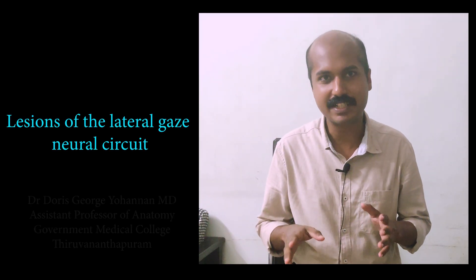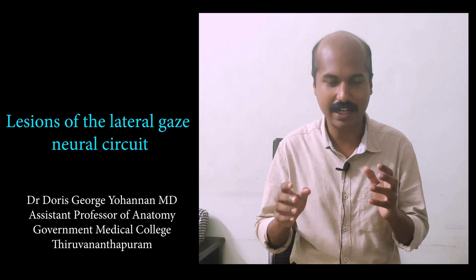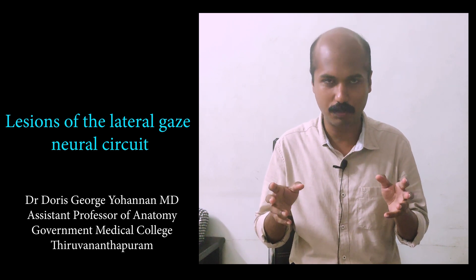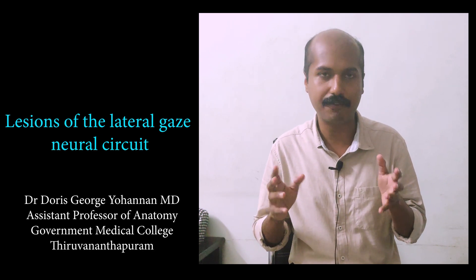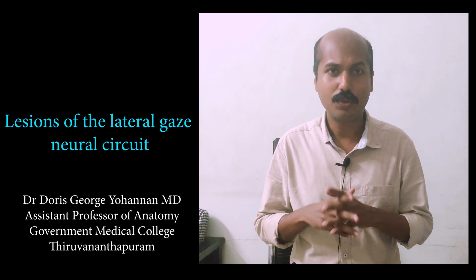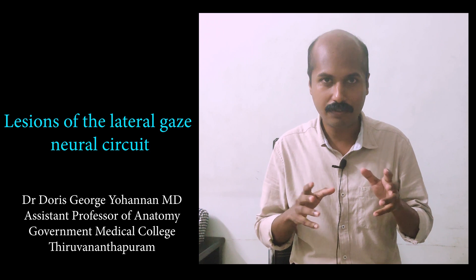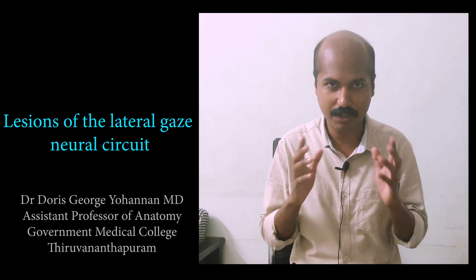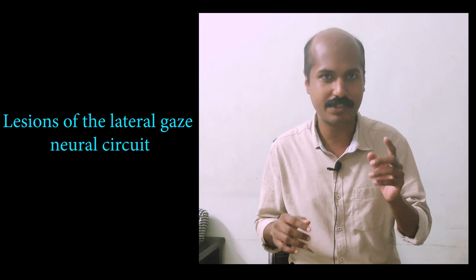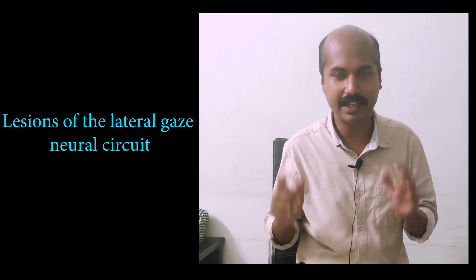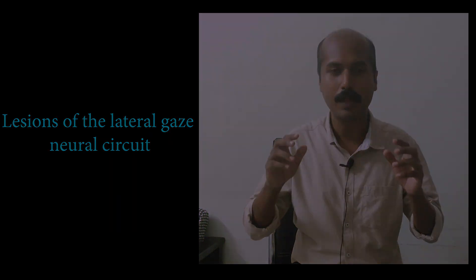Now we are going to the lesions that can affect the circuit which connects the sixth nerve and the oculomotor nucleus, and can affect lateral gaze. If you are not familiar with the functional anatomy of the circuit, I suggest you see the previous video first and then come to this video.